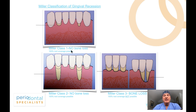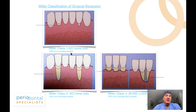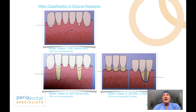Miller Class 1: mild recession, and the key — no bone loss. Therefore, 100% root coverage is possible. When you send a patient to the periodontist for a gum graft and the patient comes back, in a case like this — no radiographic bone loss, minimal probing depths, beautiful papillas filling in the embrasures — the expectation of 100% root coverage should be the case.